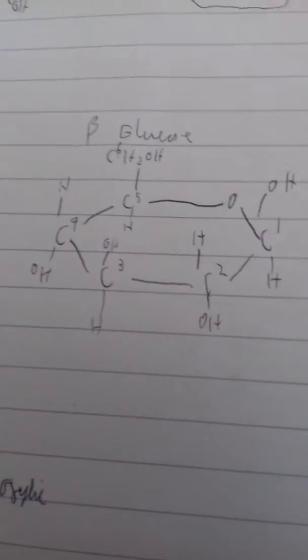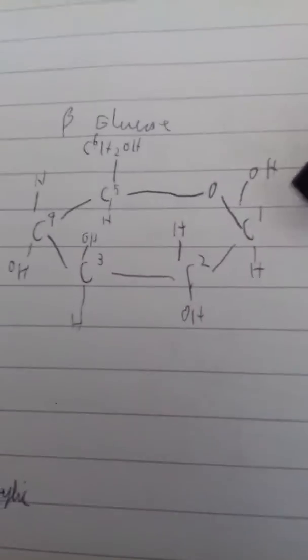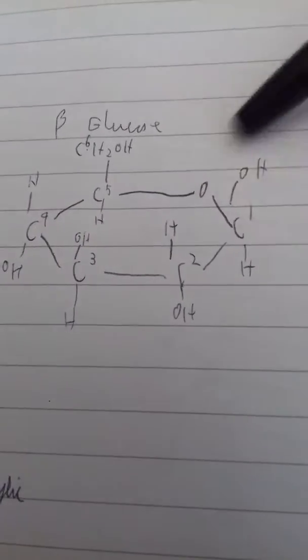Beta glucose is exactly the same apart from carbon 1. At this position, the alcohol group is on the top instead of on the bottom.